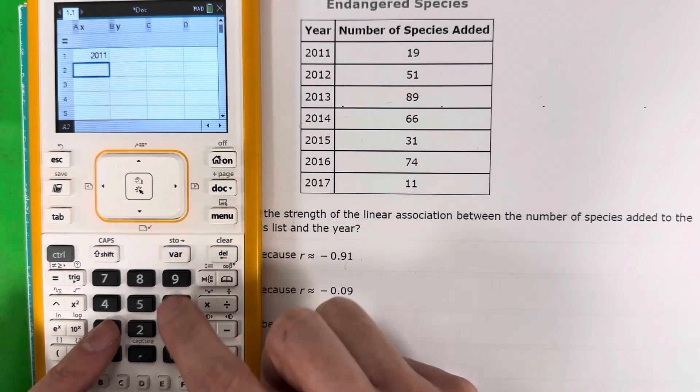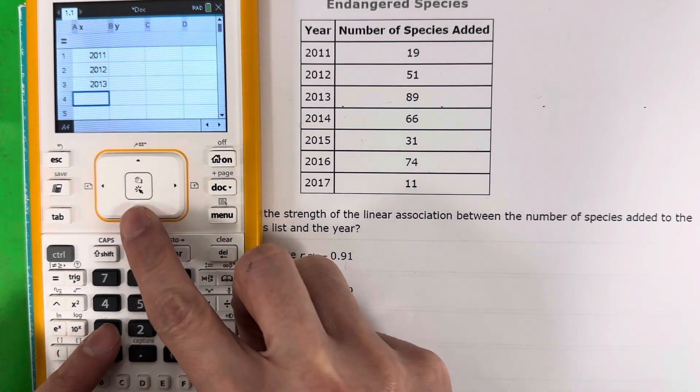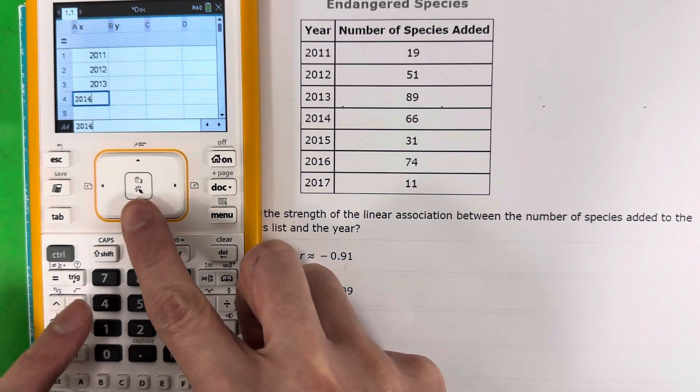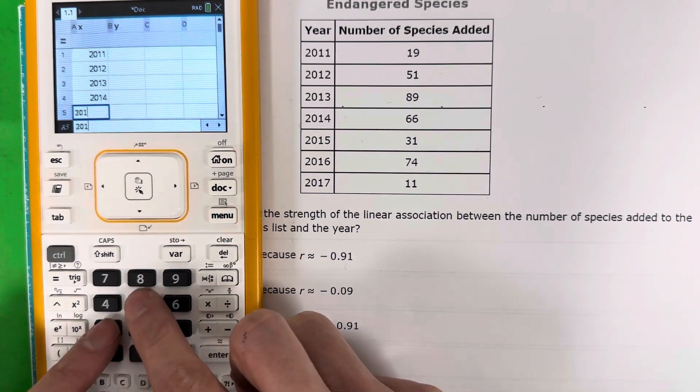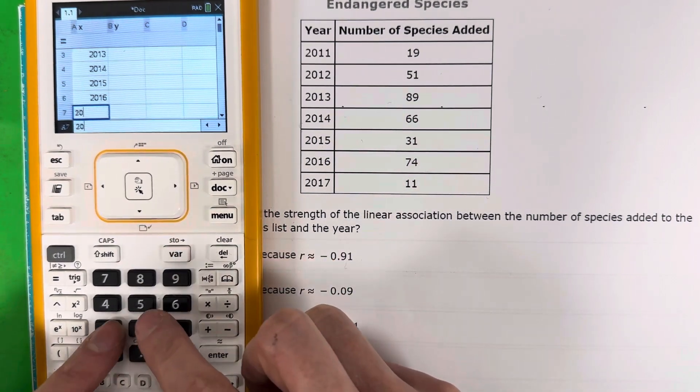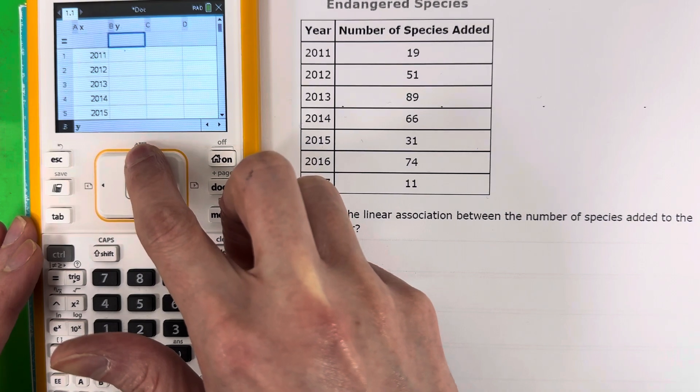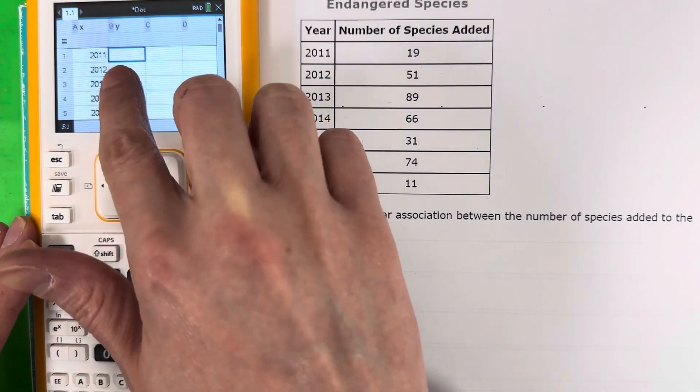So go ahead and put that down. So 2011, 2012, 2013, you're going to have to put them all 2014, 2015, 2016, 2017. Go down, go right, go back all the way up. Make sure you are right next to the 2011.